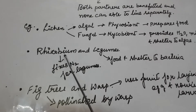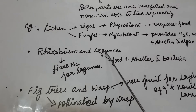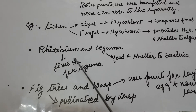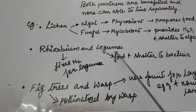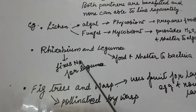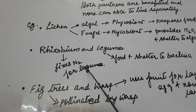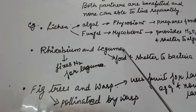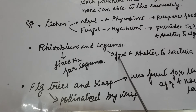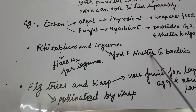Another example is the interaction between Rhizobium bacteria and leguminous plants. Nitrogen-fixing bacteria are present in the root nodules of leguminous plants. This bacteria fixes atmospheric nitrogen for the legumes, and in turn, the legumes produce food using atmospheric nitrogen and provide it to the bacteria, also giving shelter to the bacteria.